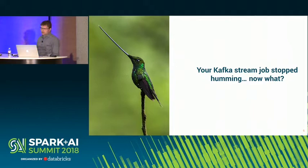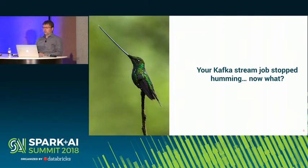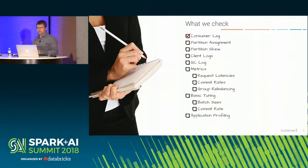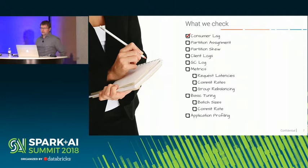Typically when someone comes to us to debug a stream processing job, they'll say: somehow something stopped working, we don't know what, things still seem to be happening but we're not making any progress. Here's the checklist we walk our users through — all the things you want to consider when looking at a stream processing application built on top of Kafka: consumer lag, partition assignment, partition skew, client logs, GC logs, and metrics. These are the basic things you need to collect to figure out what's happening and identify where the problem is.